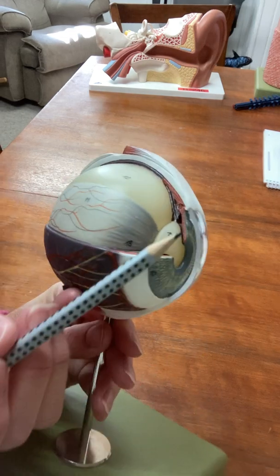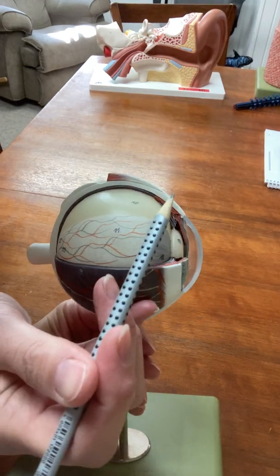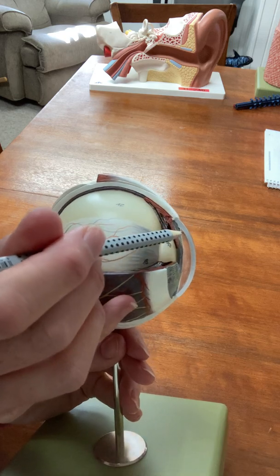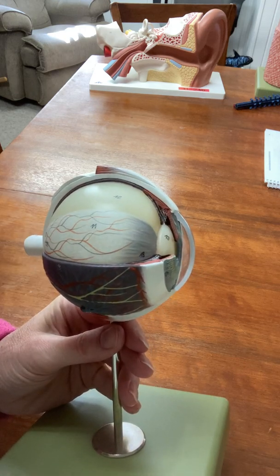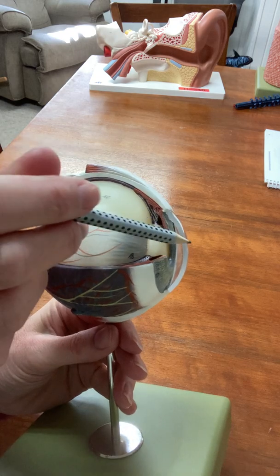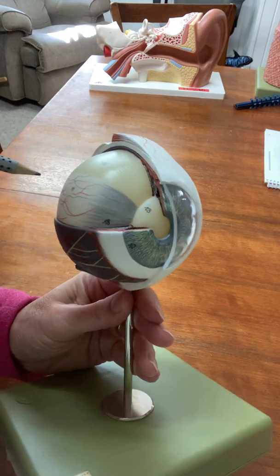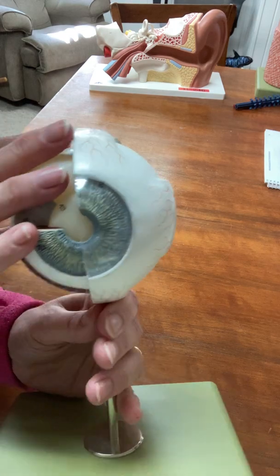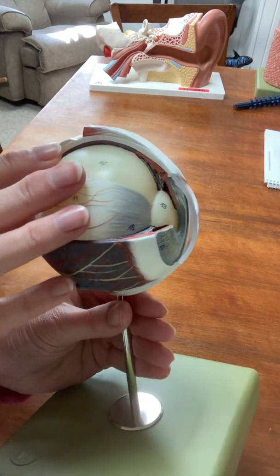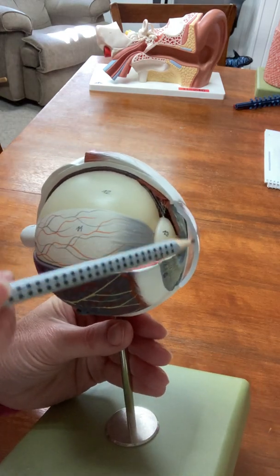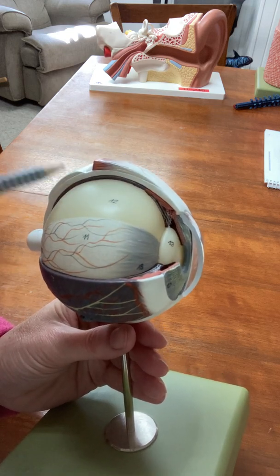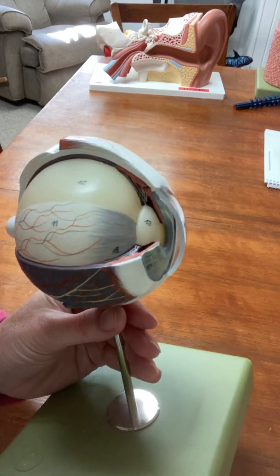And then when you move anteriorly the sclera becomes clear. That's still the outermost layer of the eye, but we don't call it a sclera anymore because it's clear. See how you can see through it. Then we call it the cornea. So the cornea and the sclera are the outer layer of the eye.